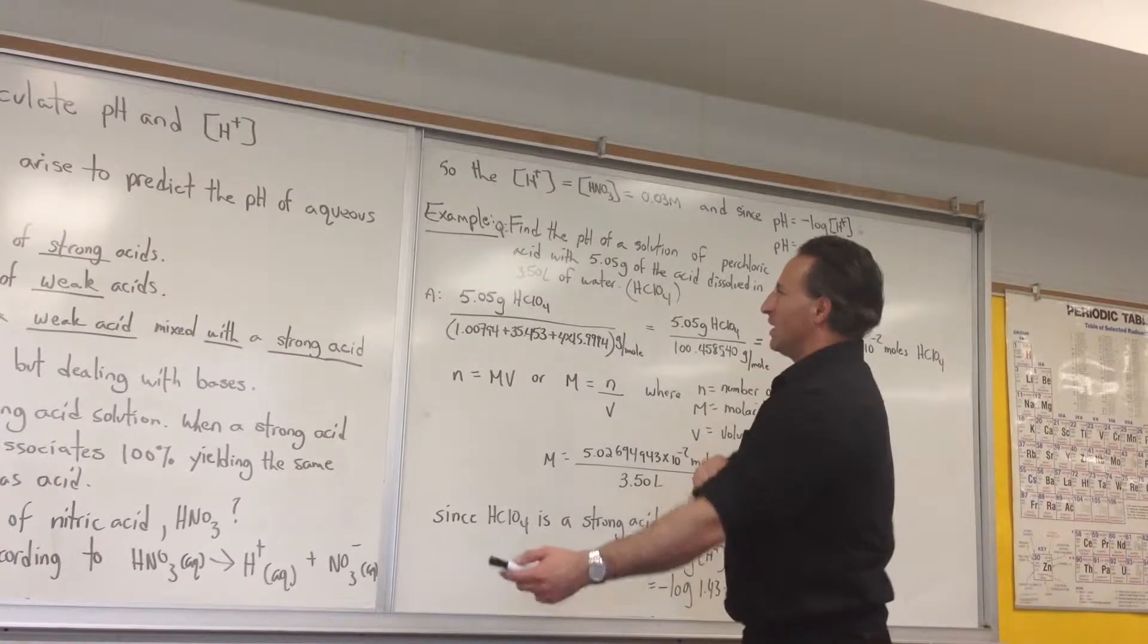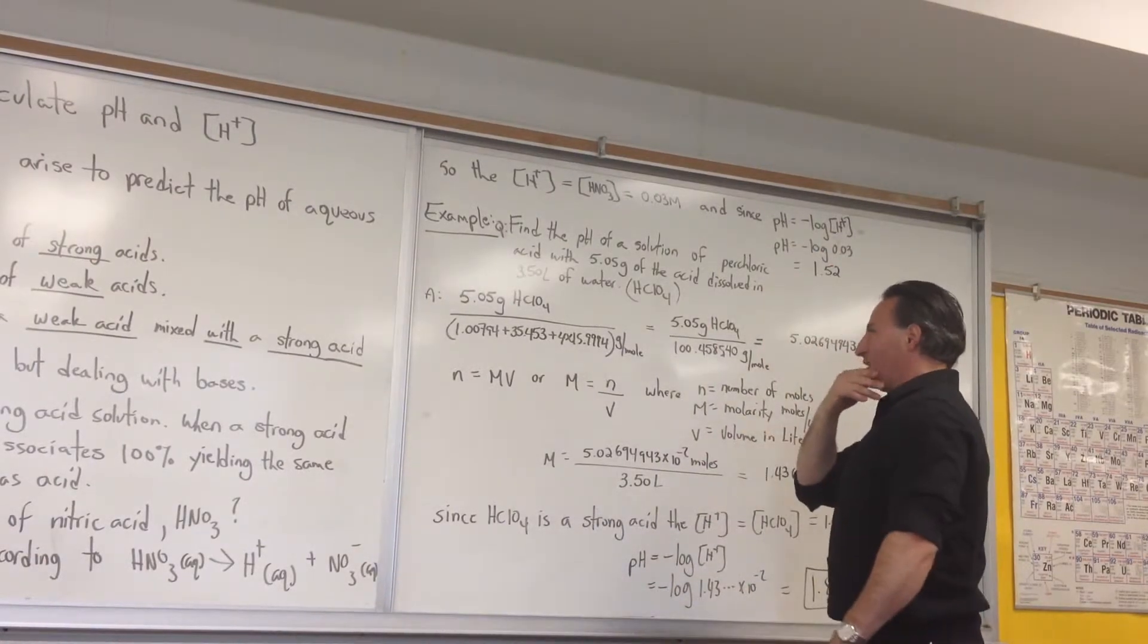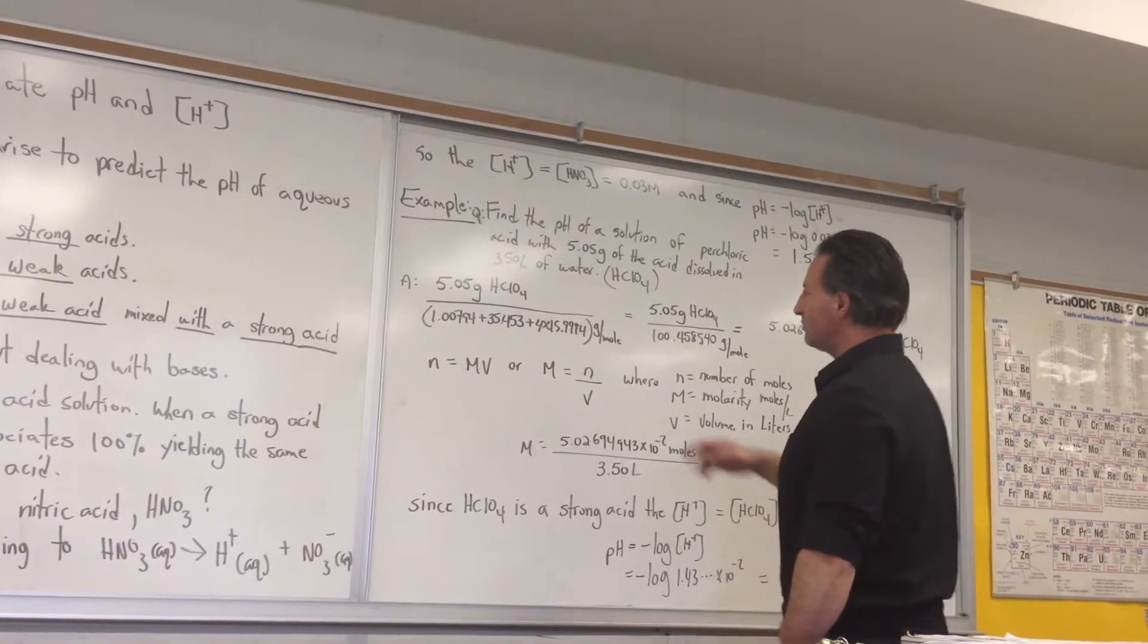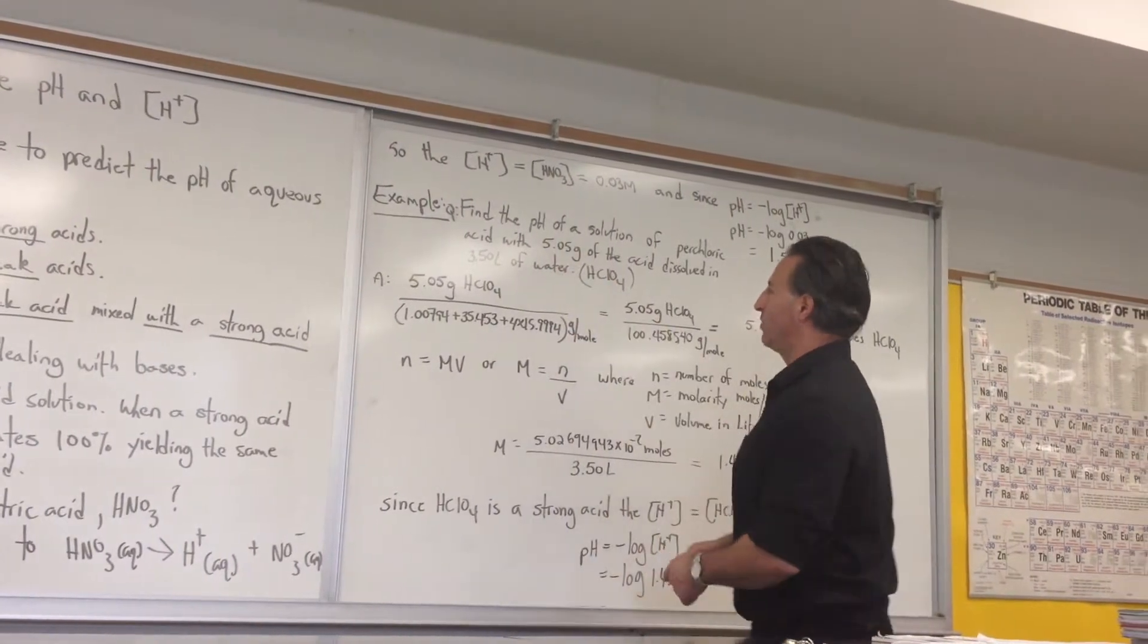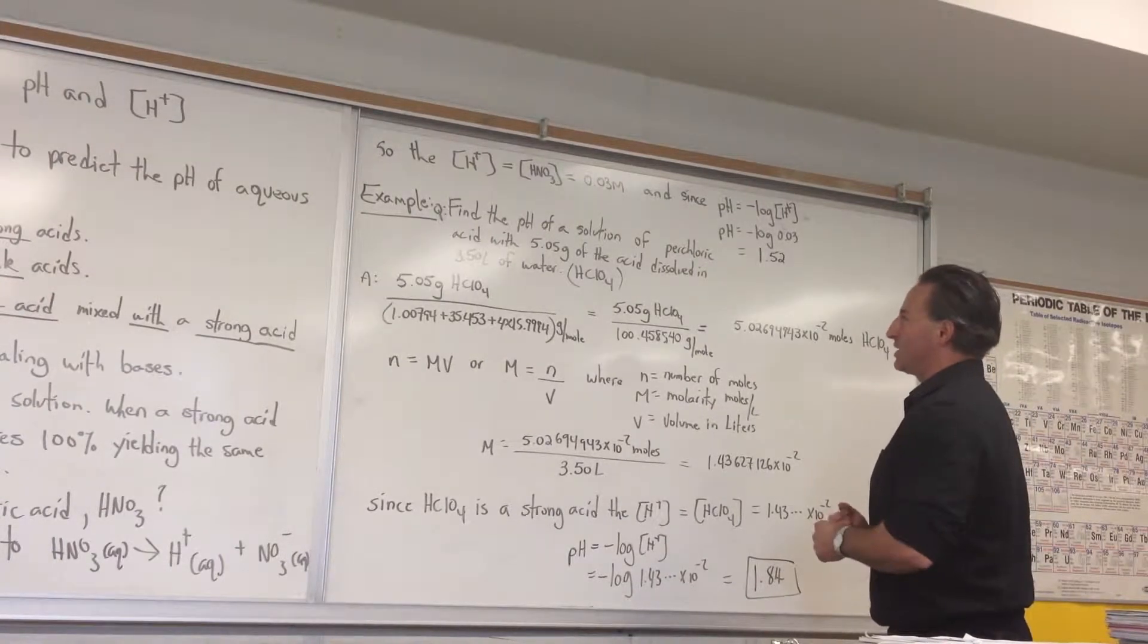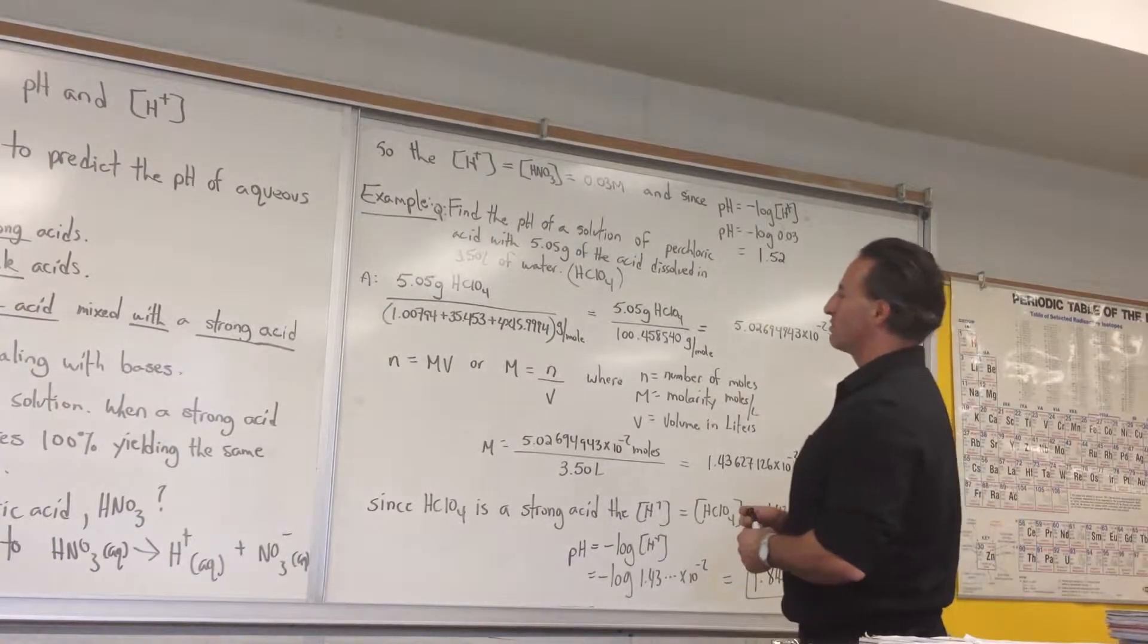Perhaps you might get a problem where they give you the mass of the acid. In which case, you'd have to find how many moles of the acid are in the solution. The question says, find the pH of a solution of perchloric acid with 5.05 grams of the acid dissolved in 3.5 liters of water.